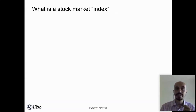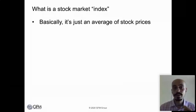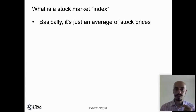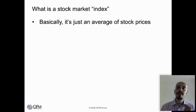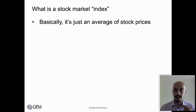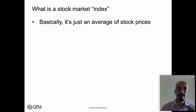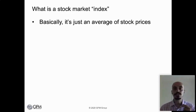In a nutshell, a stock market index is basically just an average of stock prices. It's just a measure of whether stock prices on average have gone up or down. That type of index specifically is called a price index, and there are different types of indices we'll talk about later. But the Dow Jones Industrial Average is just an average of stock prices.